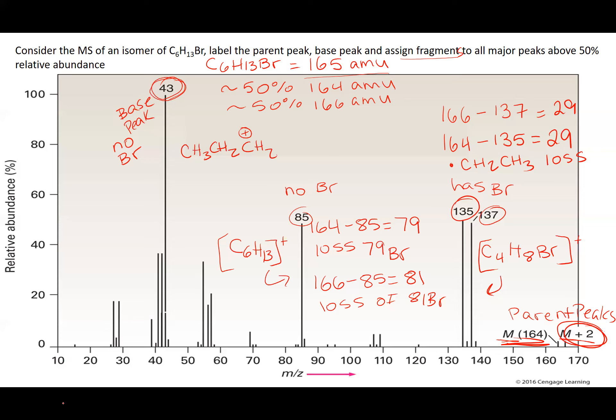So at this point I've analyzed all the fragments. The problem didn't actually ask me to propose a structure, but I can here. So the structure I propose needs to have a propyl. It needs to have an ethyl, but of course if it has a propyl it's going to have an ethyl. And it needs to fit this formula. So I might propose two, three, four, five, six, that's six carbons, and then bromine. Because we can lose propyl, we can lose ethyl, and then we can lose the halide.